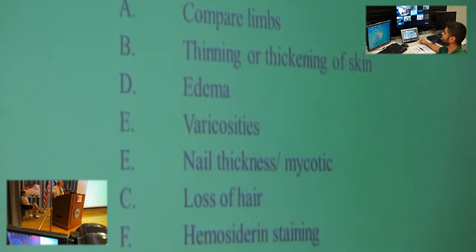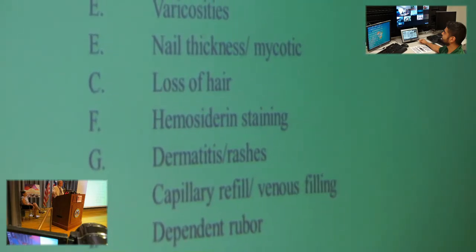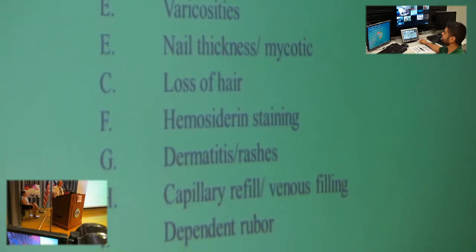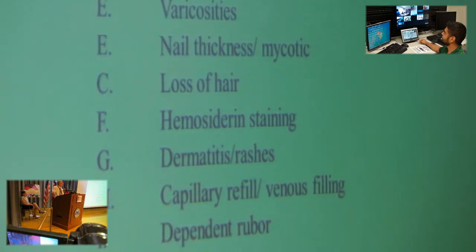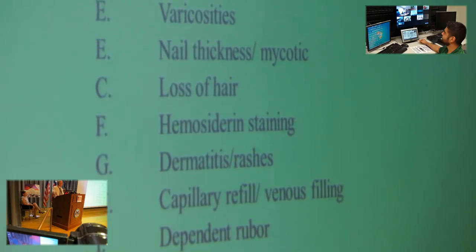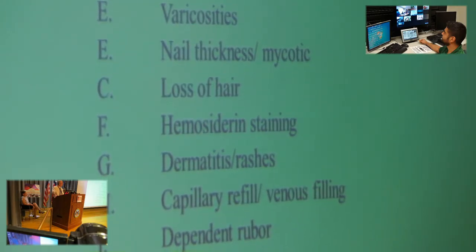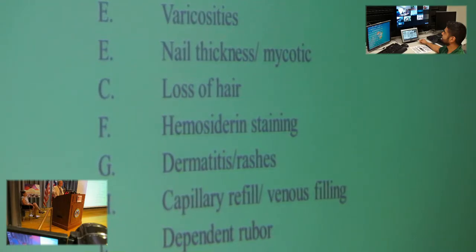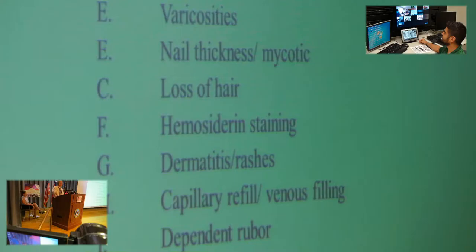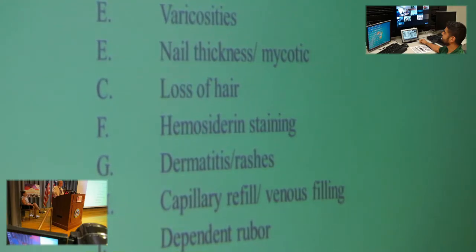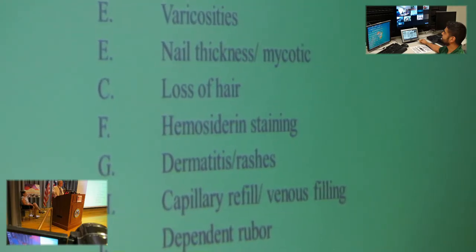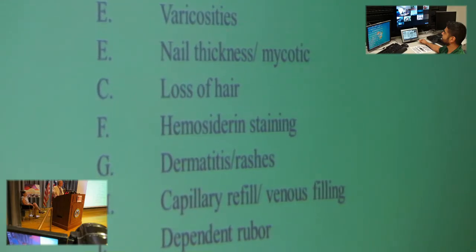Of course, look for varicosities — those superficial veins with incompetent valves causing pooling. Loss of hair is a pretty sensitive sign: when you have somebody with an ischemic leg or ischemic foot, it's very seldom that they'll have any hair on there. If something looks like an arterial ulcer but the patient has all kinds of hair on their legs and feet, there's a good chance something else is going on. All of this is important.